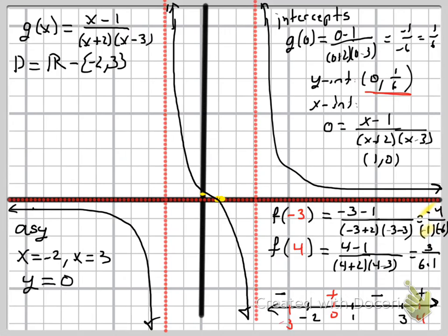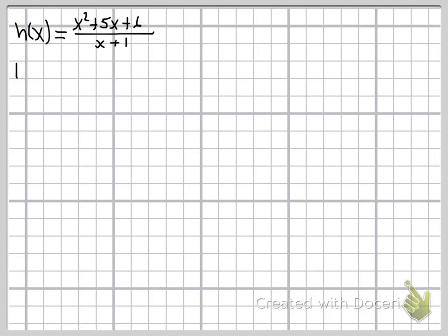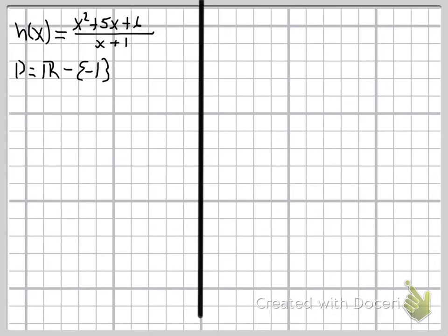One more example. This one is going to have a slant asymptote. H(x) = (x² + 5x + 6) all over (x + 1). I know there's a slant asymptote because the numerator's degree, 2, is exactly 1 larger than the denominator's degree, 1. Factoring the numerator: x² + 5x + 6 = (x + 2)(x + 3). Neither x + 2 nor x + 3 matches x + 1, so nothing reduces. Setting x + 1 = 0 gives x = negative 1, so the domain is all reals except negative 1.